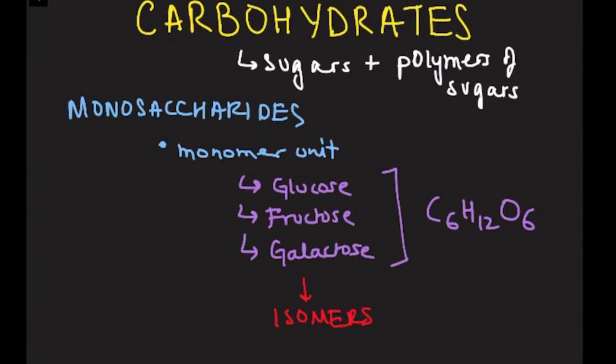Now, isomers are substances that have the same formula, but they have different structures, and that's what makes them different molecules.